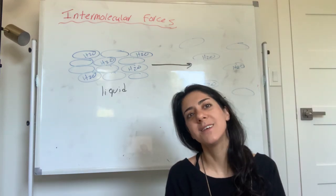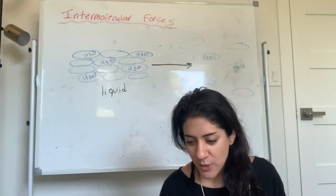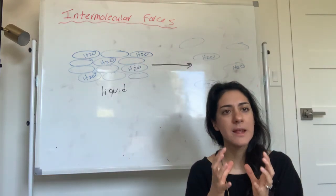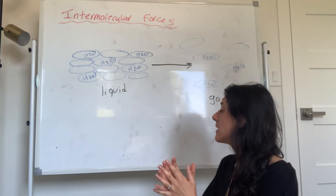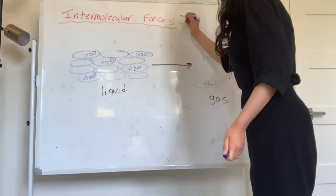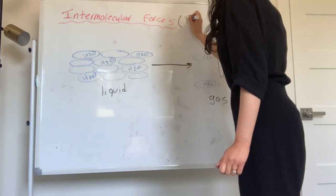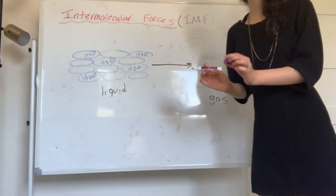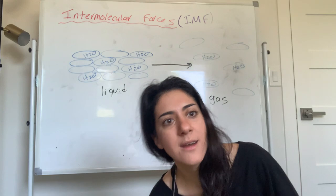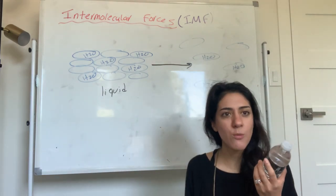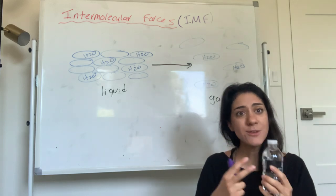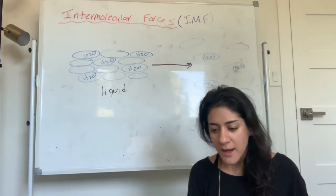The reason is intermolecular forces. Intermolecular forces — which we also call IMF — are forces that keep the liquid and the solid together. For example, in this bottle I have millions of water molecules, but they're not running away from each other. They're nicely held together through intermolecular forces.